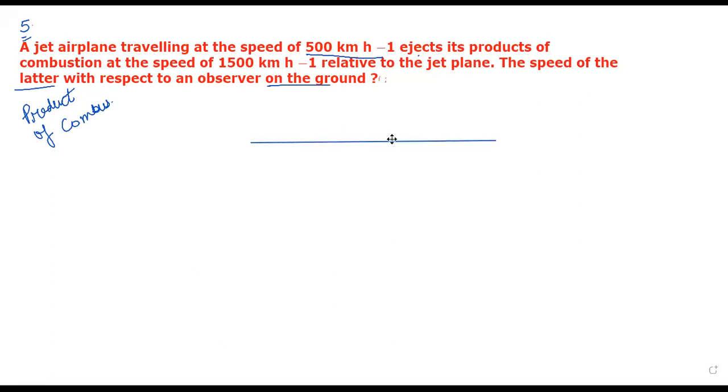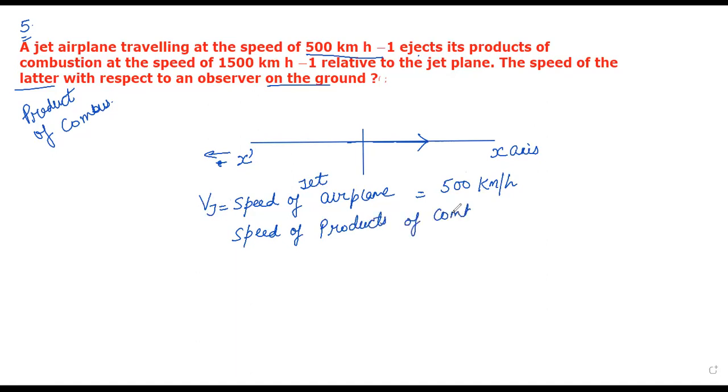Let's set up the problem. The jet moves in the positive x-axis direction. Speed of the jet airplane, we'll take as positive right side, so vj equals 500 km per hour. Then, speed of product of combustion, we will let be vp, because we don't know the absolute value. We only know the relative value of 1500.